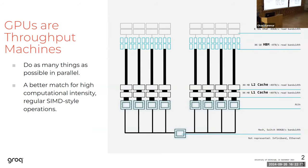GPUs are throughput machines, designed to work well with high computational intensity — to do many things efficiently in parallel rather than one thing as quickly as possible. They work best when processing is oversubscribed with matrix-matrix-multiply work, with lots of computation overlapped with memory reads to hide memory latency costs. Consequently, GPUs have been in huge demand both for training and inference, and Nvidia has a lion's share of the market with a skyrocketing valuation.